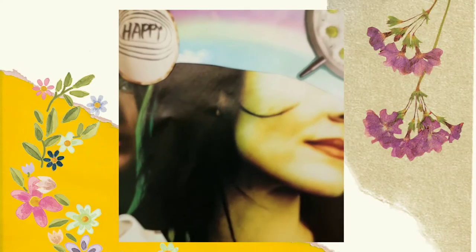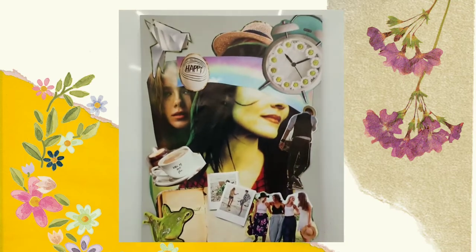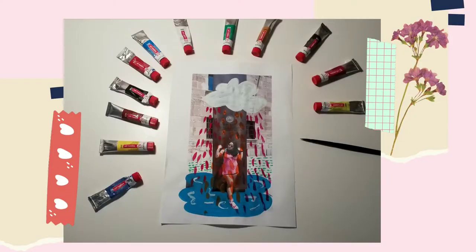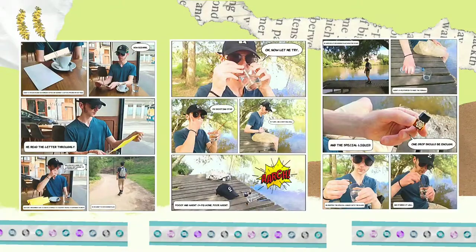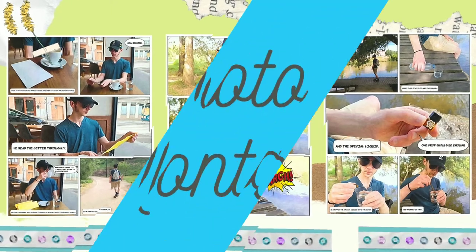Hi guys! In this video, we are going to see some different experimental photographic techniques such as photomontage, intervened photography, stop-motion, and narrative photography. Now come on, let's start.